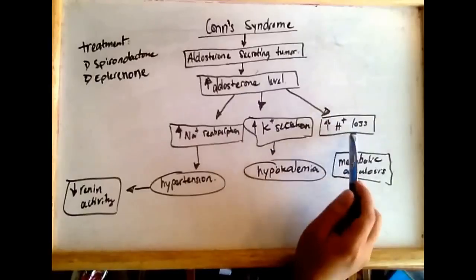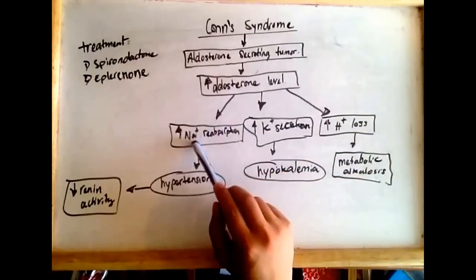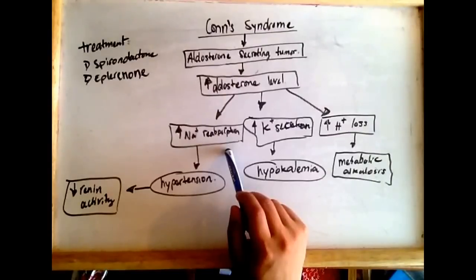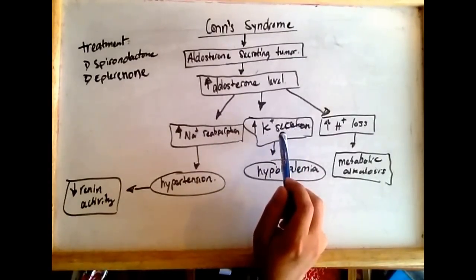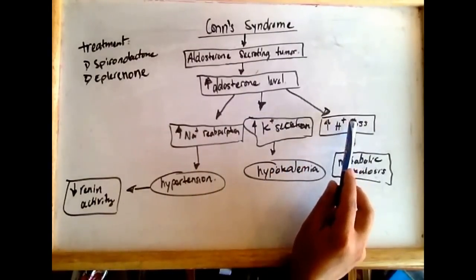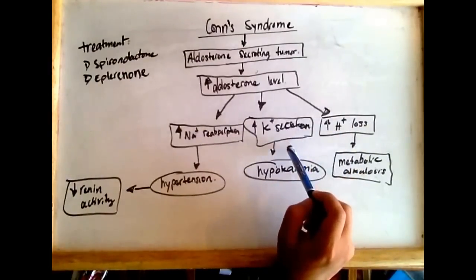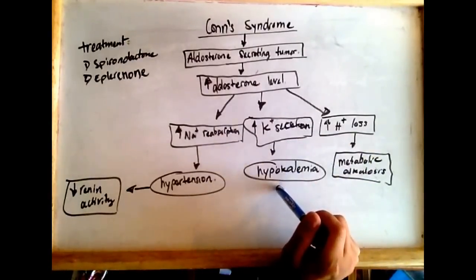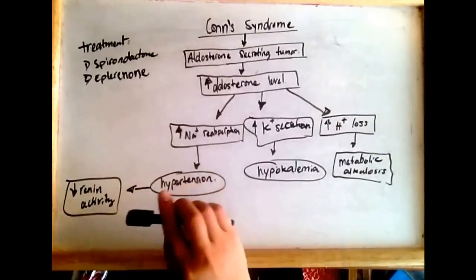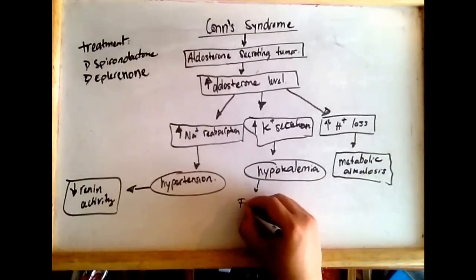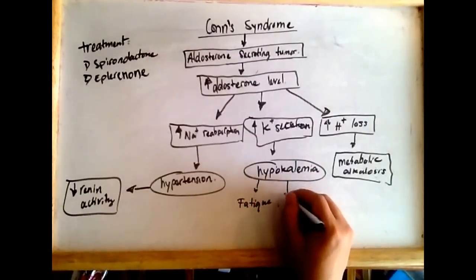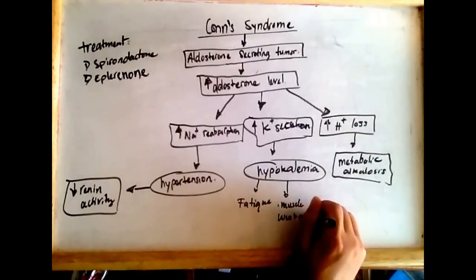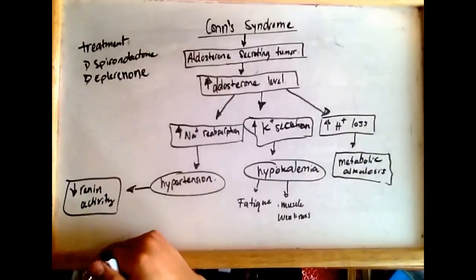Potassium and hydrogen ions have the opposite effect of sodium in the kidney. When there is an increase in reabsorption of sodium, there would be a loss of potassium and hydrogen in the urine, which leads to hypokalemia and metabolic alkalosis. Hypokalemia would lead to fatigue, muscle weakness, and occasional headaches.